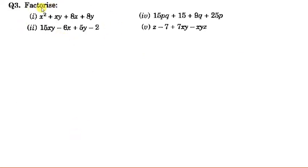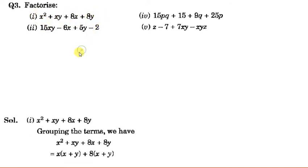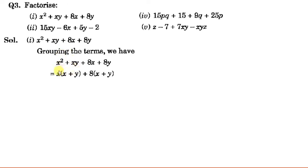Now we have an expression with 4 terms. Nothing can be taken common from all four, but if we do grouping of 2 terms each: from the first 2 terms, taking x common leaves x and y inside the bracket. From the last 2 terms, taking 8 common leaves (x + y) inside the bracket.